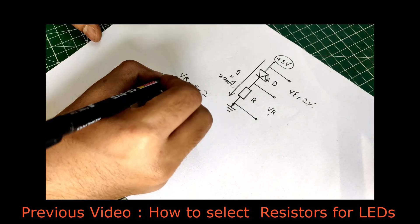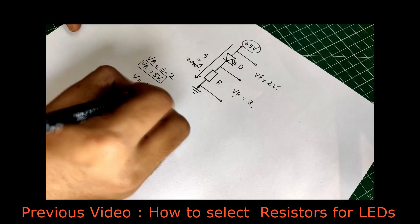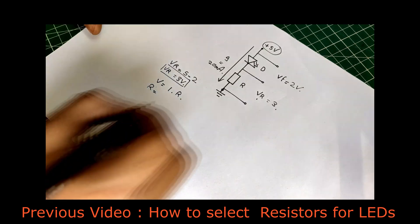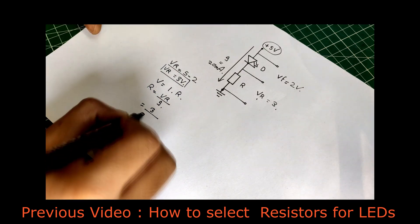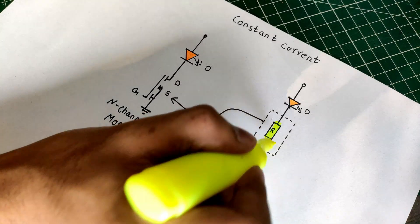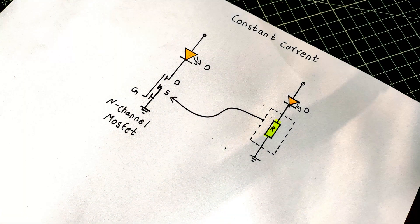In a previous video, we saw how we can calculate the resistance value to properly operate an LED. But let's say we want to vary the brightness of the LED digitally or through a potentiometer. What we would need to do is vary the current flowing through the LED.